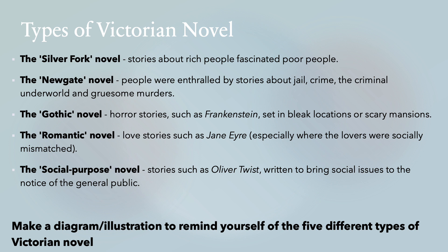The second type of novel that you might find was called the Newgate novel — that was its nickname. Newgate was a prison, because people were enthralled by stories about jail, about crime, about the criminal underworld and gruesome murders. That still remains the same today, just as the Silver Fork novel is still popular. Newgate novels are popular crime fiction — I think I read recently it's the number one genre of sales on big stores like Amazon. People love crime fiction, reading about murders and court dramas.